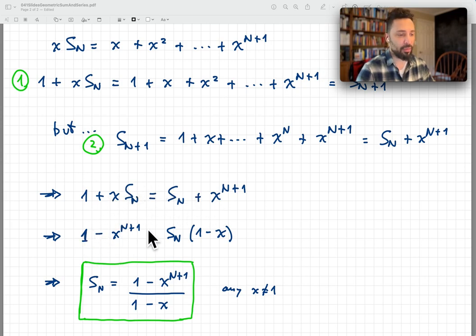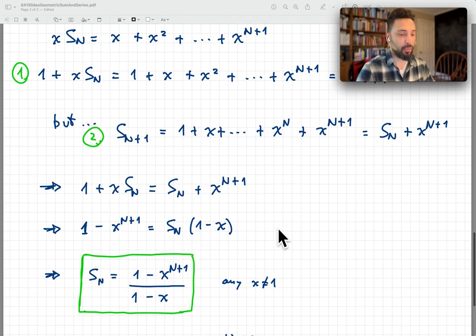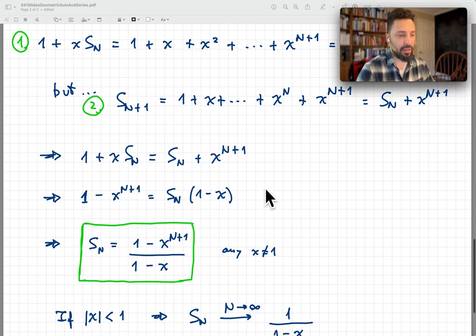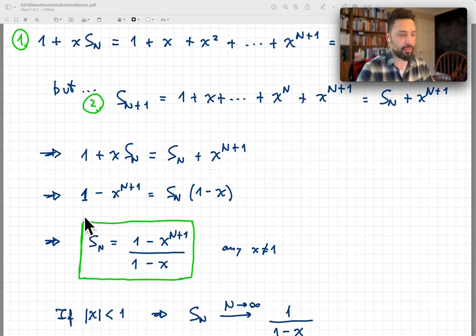And so we have 1 minus x to the power n plus 1 equals S_n times 1 minus x. So it's 1, and then the minus x comes from this term. And so of course, as long as x is different from 1, you can put this on the other side of the equation.